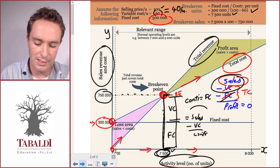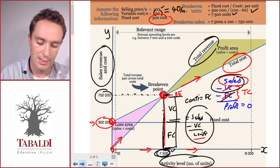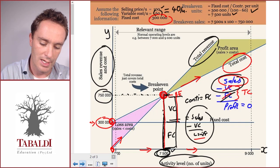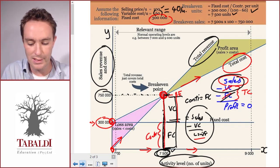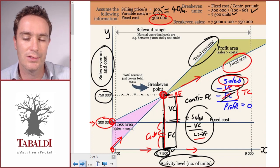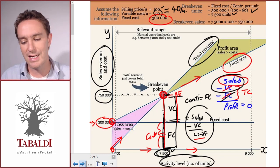Sales less variable cost equals contribution. So sales less our variable costs equals contribution, and there you can see that's the same as our fixed costs. I know this is a lot of scribbling, so take your time to make sure that you understand what this graph represents.